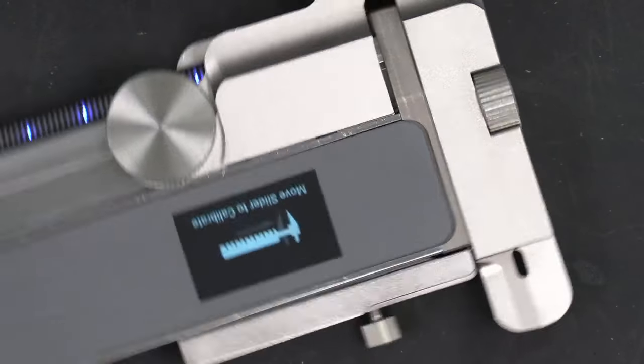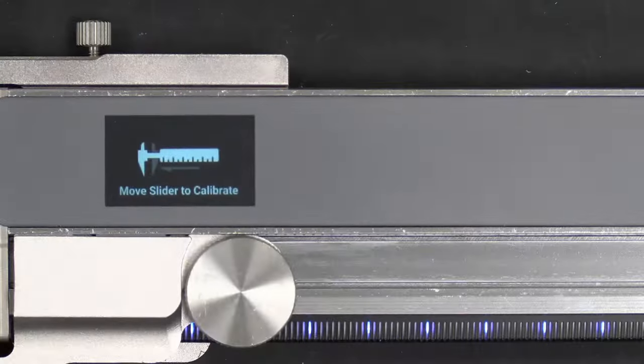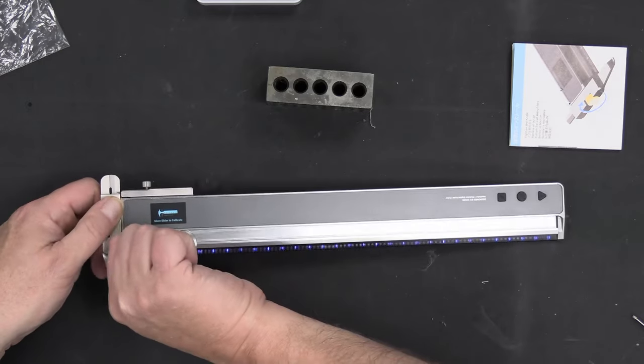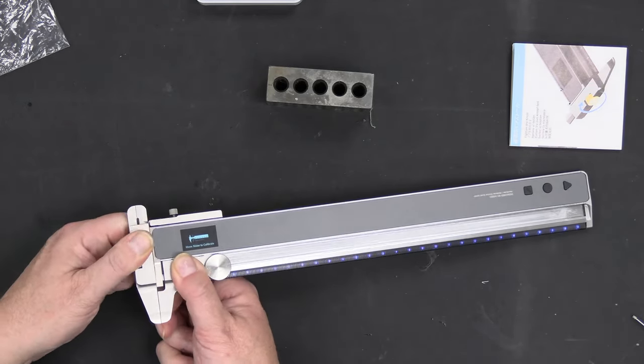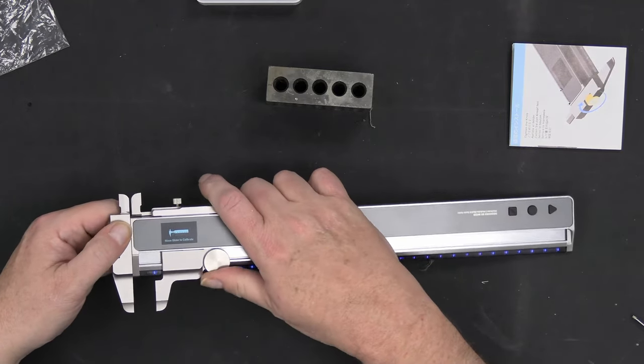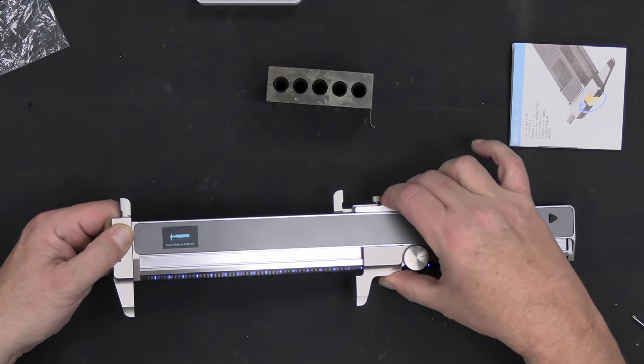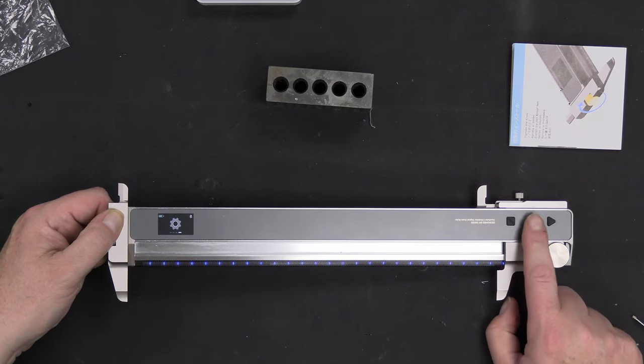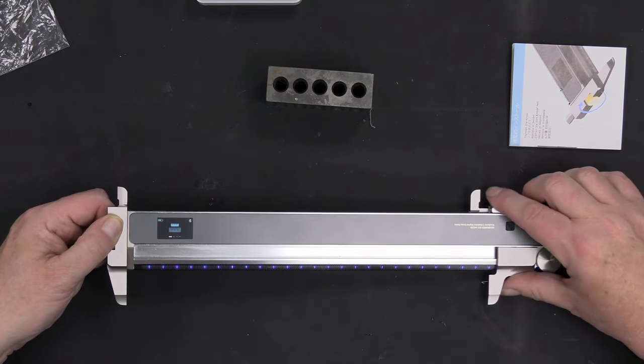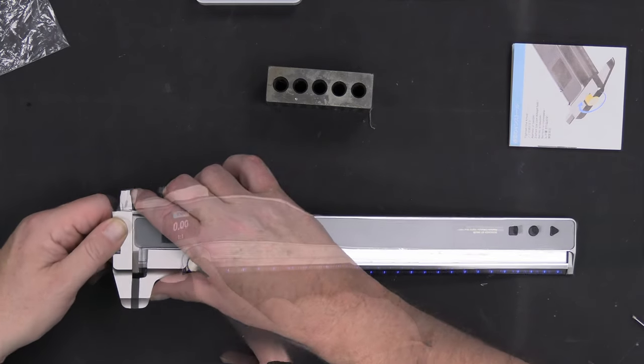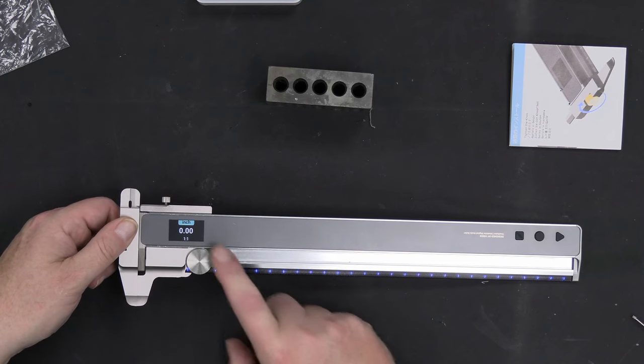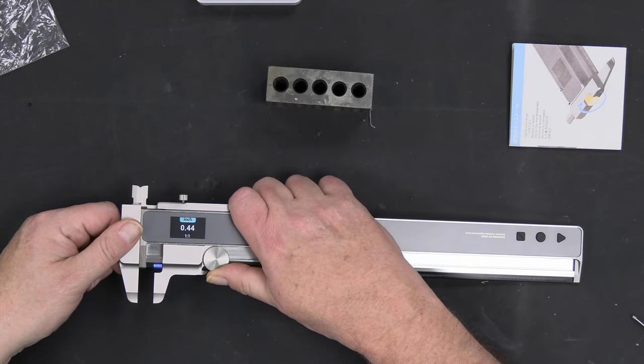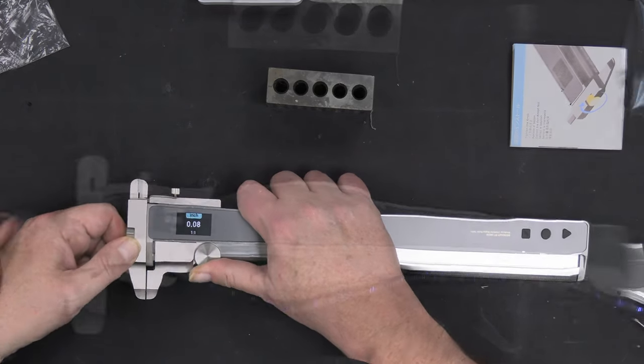So now the caliper is highlighted. We push the circle button to select it. Turn this around for you. Move slider to calibrate, so we'll slide to calibrate just like we did with the ruler. Just slide it all the way down here, push any button, and there we go. We're back here. So now we're at caliper mode.